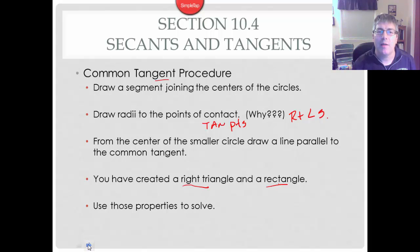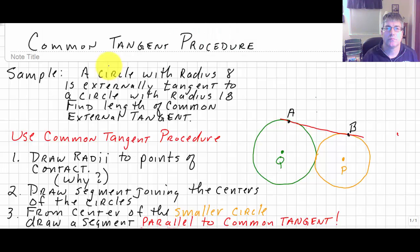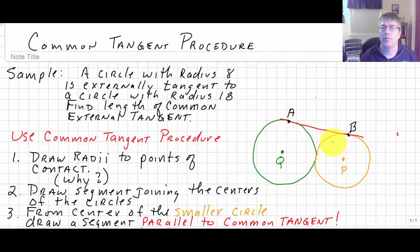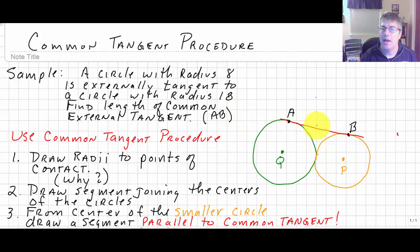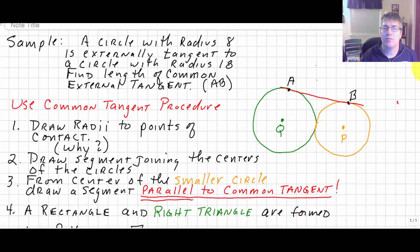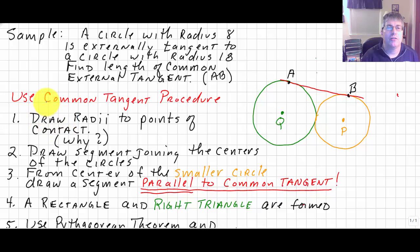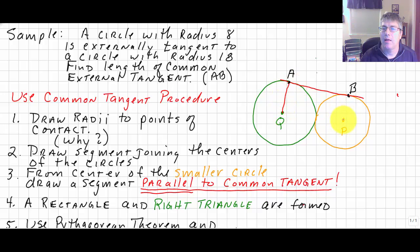Let's move on to our sample problem using the common tangent procedure. A circle with a radius of 8 is externally tangent to a circle with a radius of 18. We want to find the length of the common external tangent AB. We'll use our common tangent procedure. We draw radii to the points of contact — from Q to A and from P to B — because drawing a radius to a tangent point gives us a right angle, and that's going to be important.